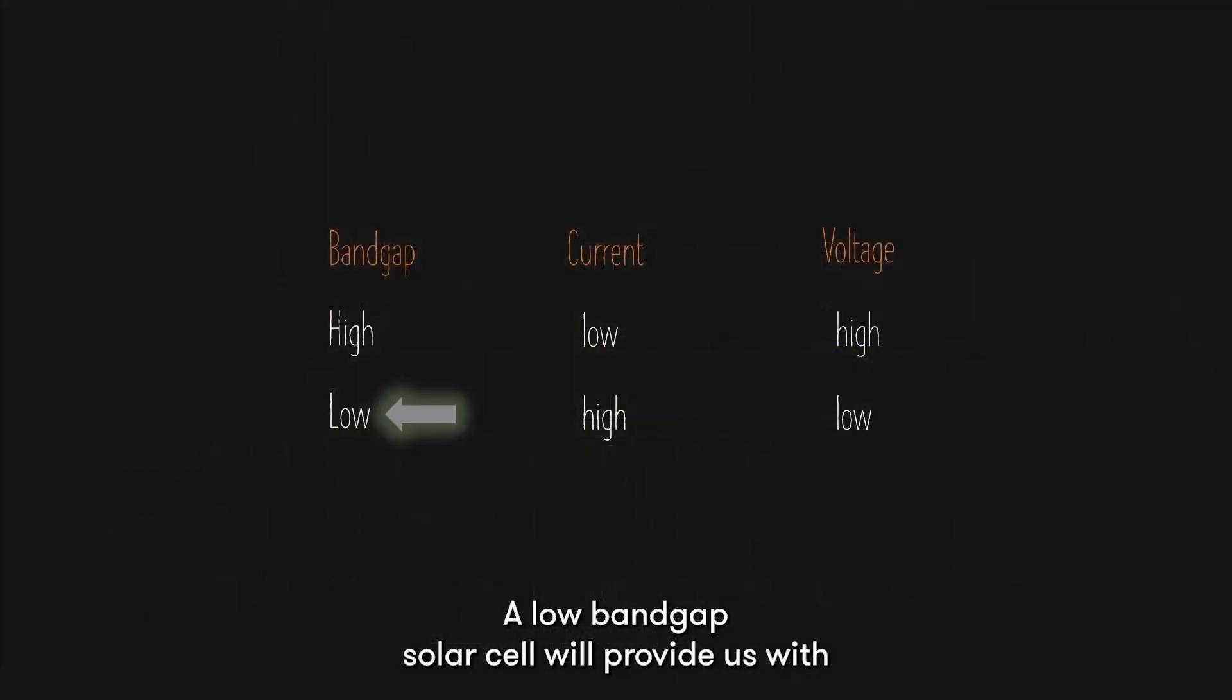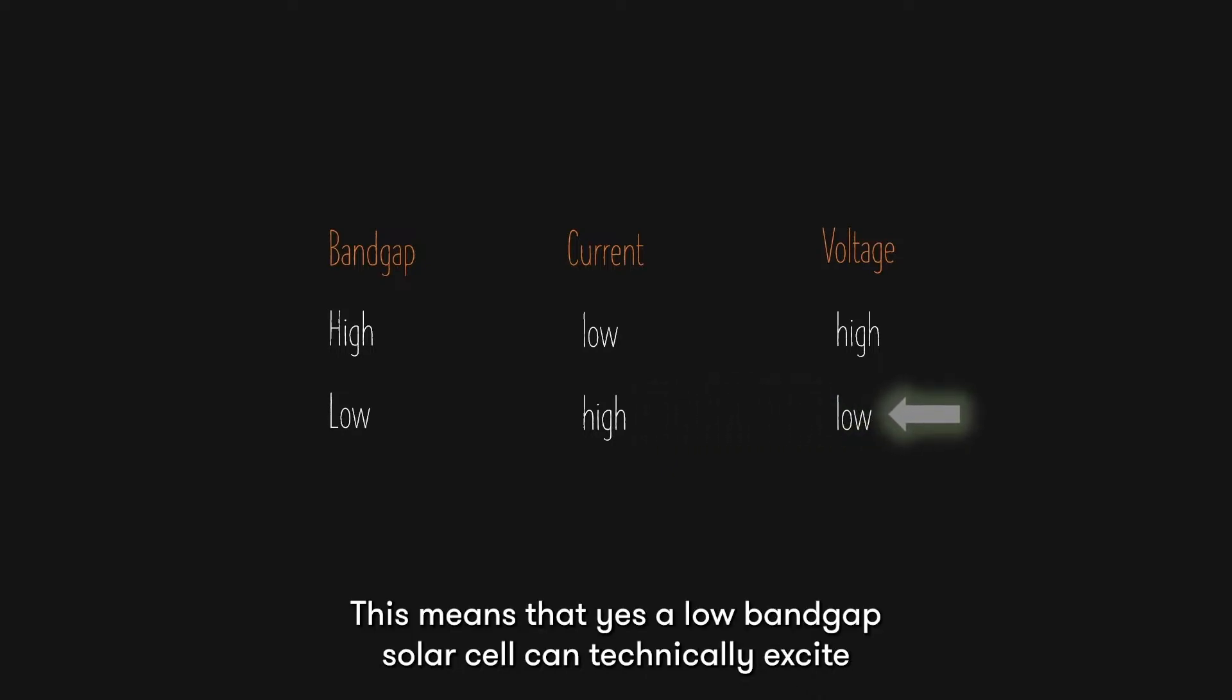A low band gap solar cell will provide us with the most amount of current, but it will give a very low voltage. This means that yes, a low band gap solar cell can technically excite a lot of electrons, but collectively, these electrons don't do much work for me. These electrons do not have enough energy to drive through the resistor. We need these electrons to do useful work for us.